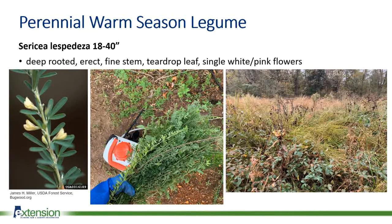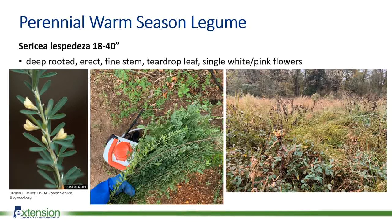Switching away from grasses, sericea lespedeza is a perennial warm season legume that gives wildlife managers fits. It was commonly planted for erosion control and years ago was recommended for wildlife enhancement — quail do eat the seed, but digestibility just isn't there, so the benefit is very minimal. It's a very deep-rooted plant that grows upright with a fine stem, characterized by a little teardrop leaf. As it flowers, it puts up small white, cream, or pinkish flowers with a purple spot. This one can be very difficult to control and requires aggressive action.